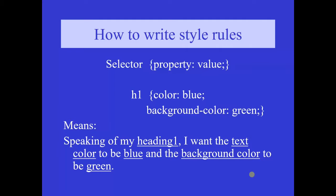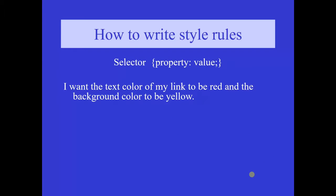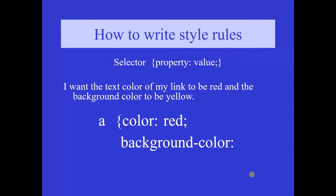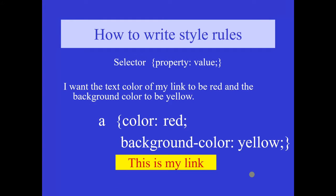Now consider another example where I give h1 with color colon blue semicolon background-color colon green. It means that for heading 1, the text color is blue and the background color is green. Consider another example where I want the text color of my link to be red and the background color to be yellow. I give 'a' within curly braces: color colon red semicolon background-color colon yellow. The output shows the link in red color with a yellow background.